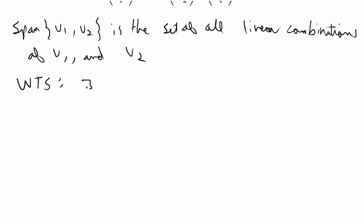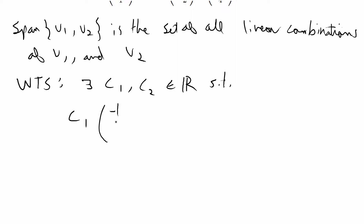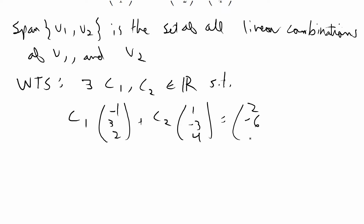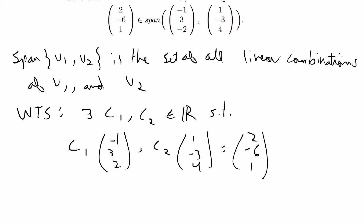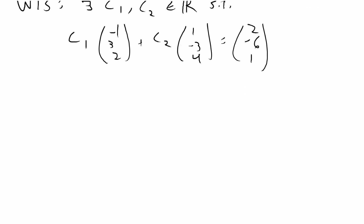We want to show that there exist scalars c1, c2 belonging to the reals such that c1 times (-1, 3, -2) plus c2 times (1, -3, 4) is equal to the vector (2, -6, 1). If we can find scalars that solve this equation, then it will be true that (2, -6, 1) is in the span of v1 and v2.